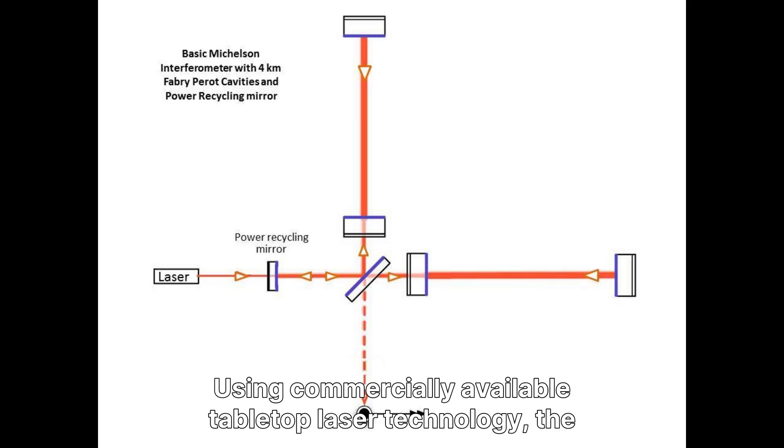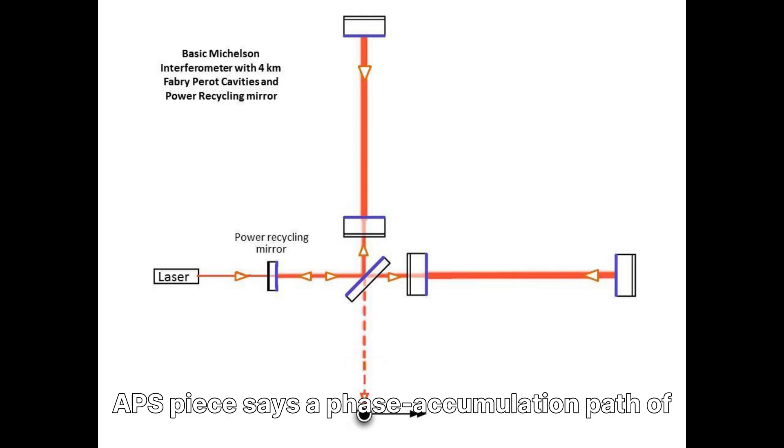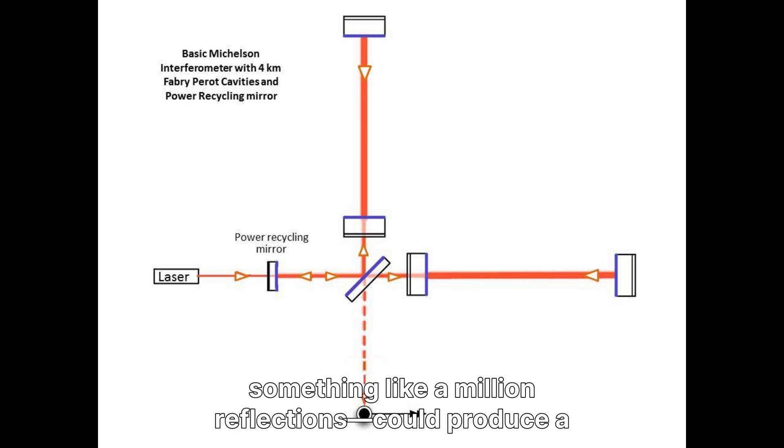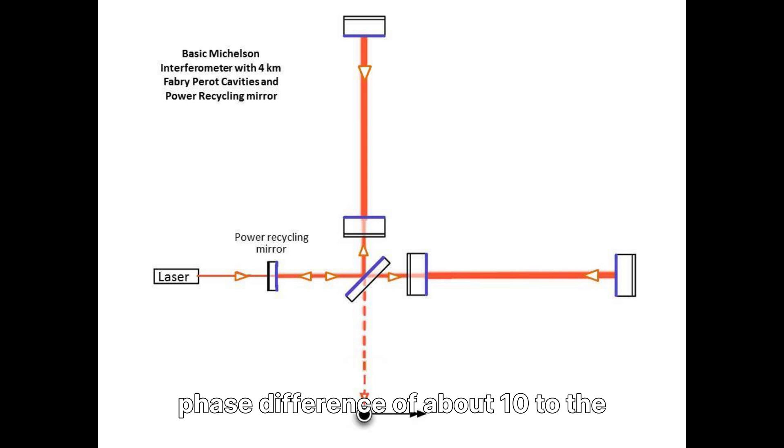Using commercially available tabletop laser technology, the APS piece says a phase accumulation path of about 1,000,000 kilometers, achievable in principle with something like a million reflections, could produce a phase difference of about 10 to the power of minus 7.